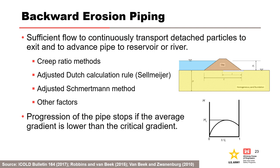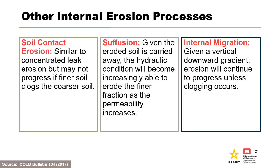For backward erosion piping, there is a critical gradient above which the particle is detached — an exit gradient consideration — and also a critical flow velocity above which soil particles will be transported in the pipe, which is an average or global gradient consideration. Backward erosion piping is the only internal erosion process where the hydraulic condition for progression is evaluated, and progression stops if the average gradient is lower than the critical gradient. The hydraulic condition for progression of soil contact erosion is similar to concentrated leak erosion, but erosion may not progress if finer soil clogs the coarser soil. For suffusion, the hydraulic condition becomes increasingly able to erode the finer fraction as permeability increases. For internal migration, given a vertical downward gradient, erosion will continue to progress unless clogging occurs.